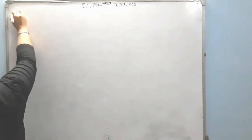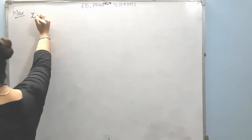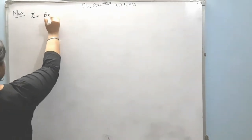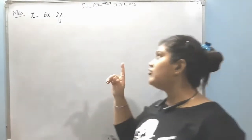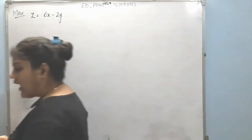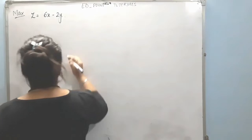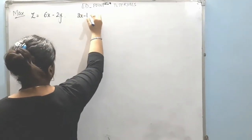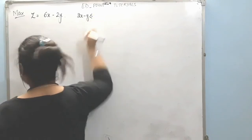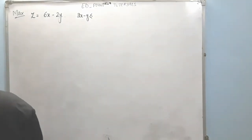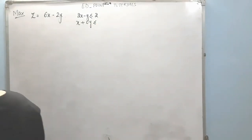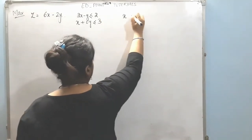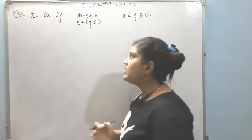In the next question we will solve the same type of problem using the isoprofit method. The question is: maximize the objective function 6x minus 2y. The structural constraints are: 2x minus y is less than or equal to 2, and x plus 0y is less than or equal to 3. The non-negative constraint is x and y greater than or equal to 0.